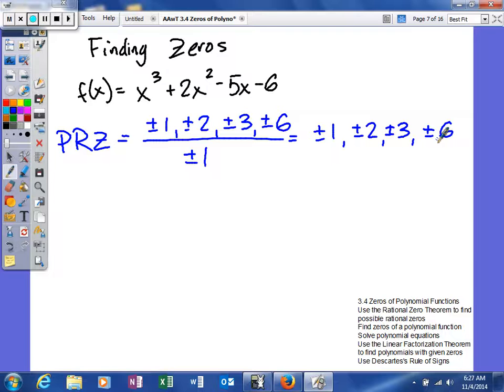Now at this point, if we were doing this by hand, what we could actually do is go ahead and try 1 and negative 1, 2 and negative 2, 3 and negative 3, and then 6 and negative 6, in the hopes of actually finding a zero.